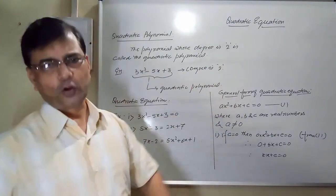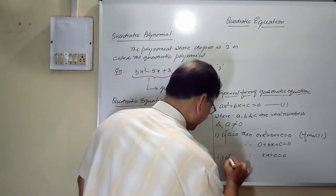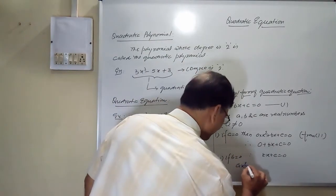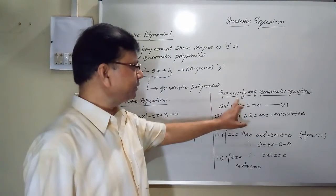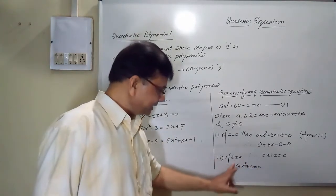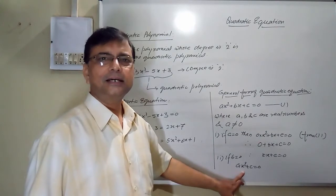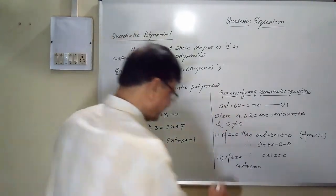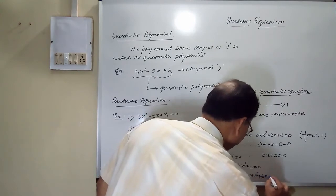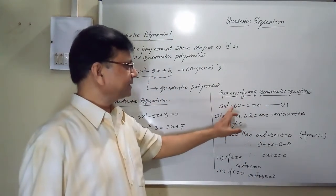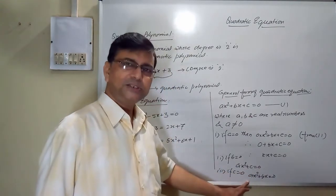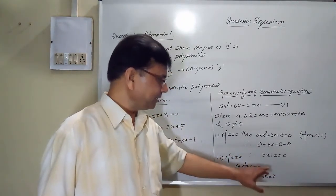Can b or c be 0? Second case: if b = 0, the equation becomes ax² + c = 0. The degree is still 2, so this is a quadratic equation. Third case: if c = 0, the equation becomes ax² + bx = 0. Again the degree is 2, so this is still a quadratic equation.